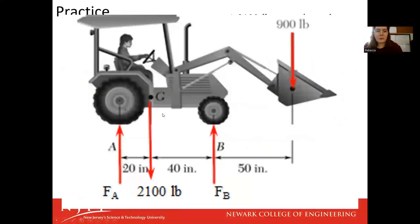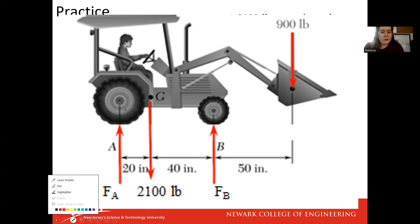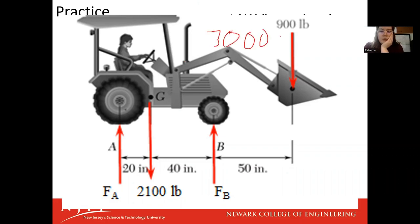We need our summation of forces in X equals zero — there is no X force in this image. Our summation of forces in Y equals zero because we're in equilibrium, so we know that our positive forces are going to equal our negative forces. So we'll have 2,100 plus 900, giving 3,000 equals F_B plus F_A.